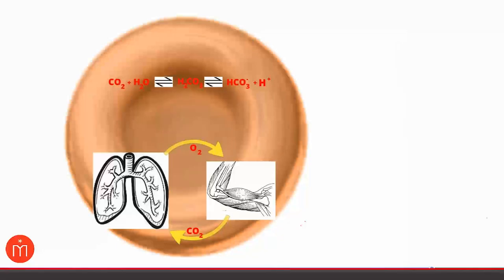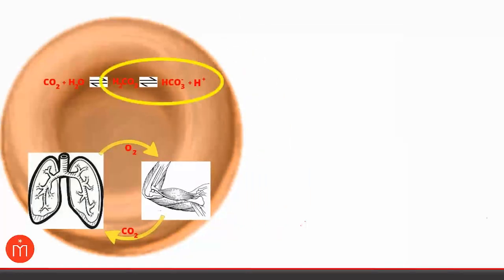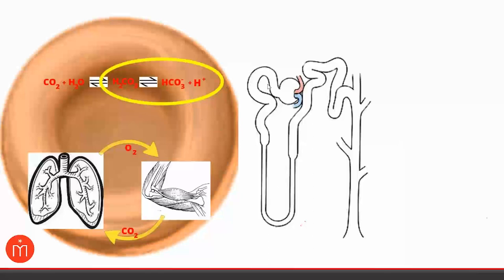This carbonic anhydrase mechanism isn't limited to red blood cells — it also occurs in the kidney, specifically the proximal tubule near the glomerulus. Much of the filtered bicarbonate needs to be reabsorbed, but charged molecules can't simply diffuse across tubular membranes. The physiologic solution is to convert bicarb back into CO2 using high levels of carbonic anhydrase in the proximal tubular cells, allowing the reaction to run in reverse and reabsorb bicarbonate.